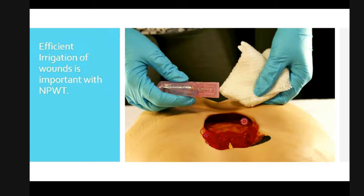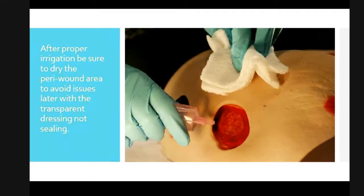Efficient irrigation of wounds is very important with negative pressure. Most of the time you're going to irrigate with normal saline, but at times you may actually need to irrigate with something such as sterile water — for example, if you're using a silver product that isn't compatible with saline. We're going to make sure we're drying that peri-wound area so that when we put our transparent drape on, we'll get a nice seal. The irrigation is particularly important because foams are going in — especially into undermined areas — so you really want to thoroughly irrigate so that everything is loosened and comes out of the wound.